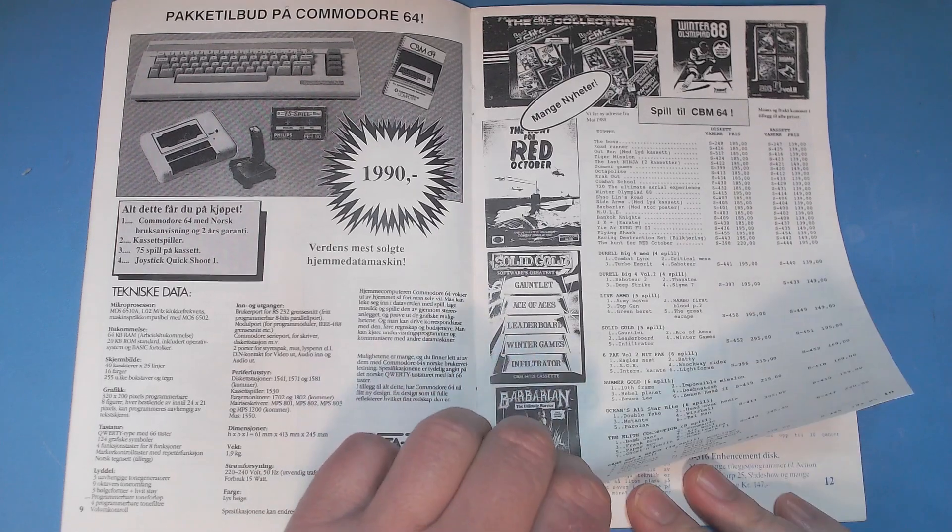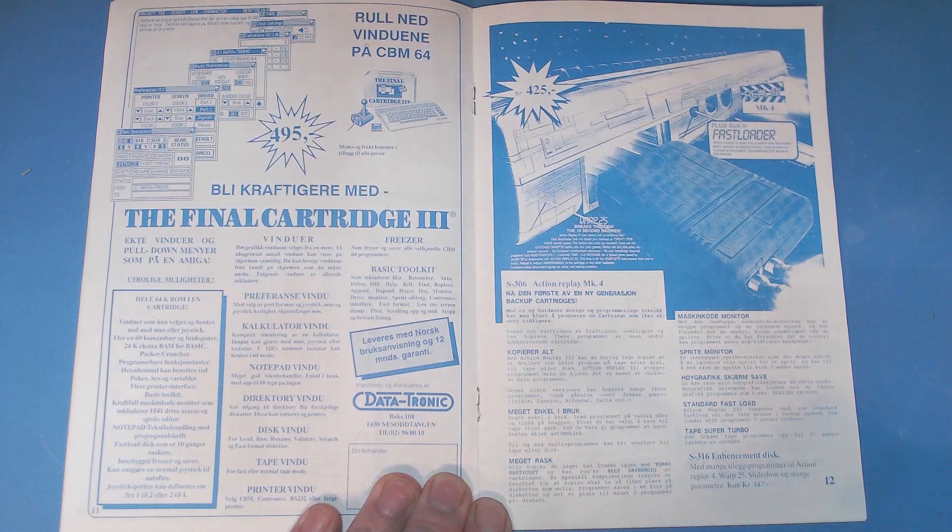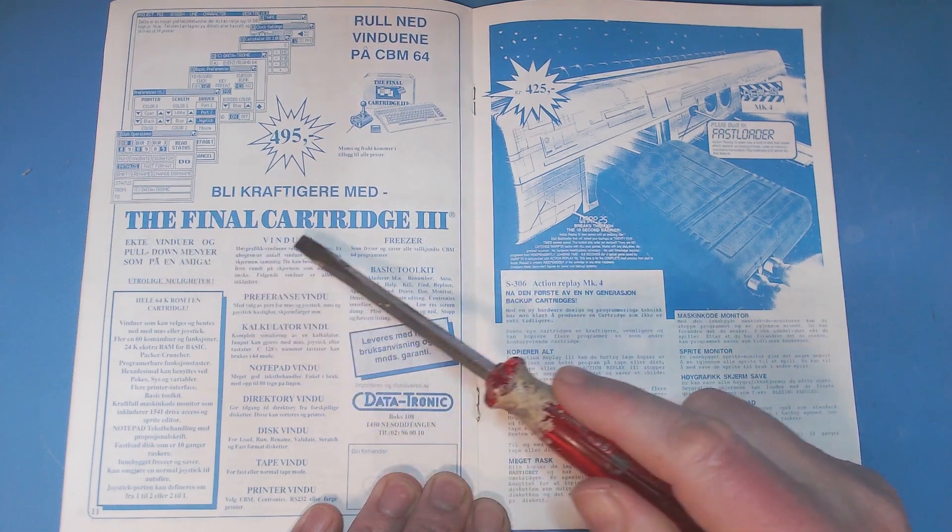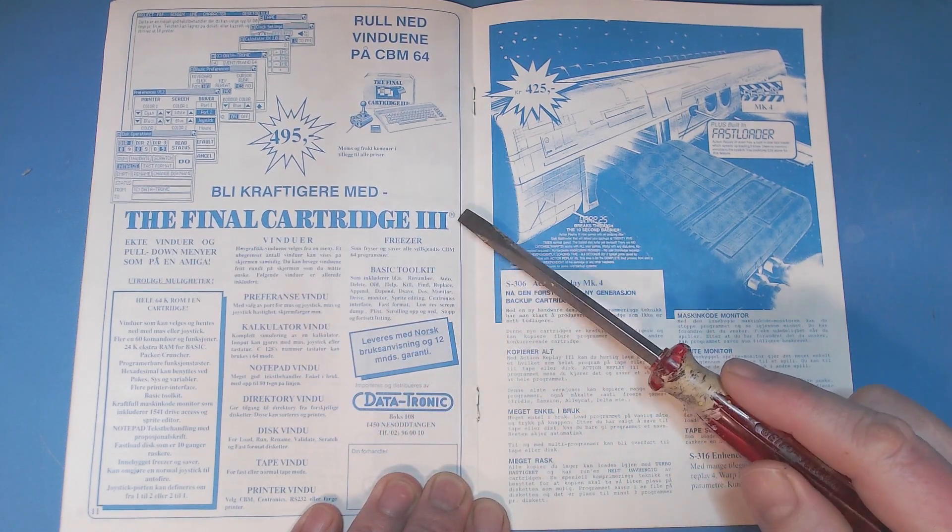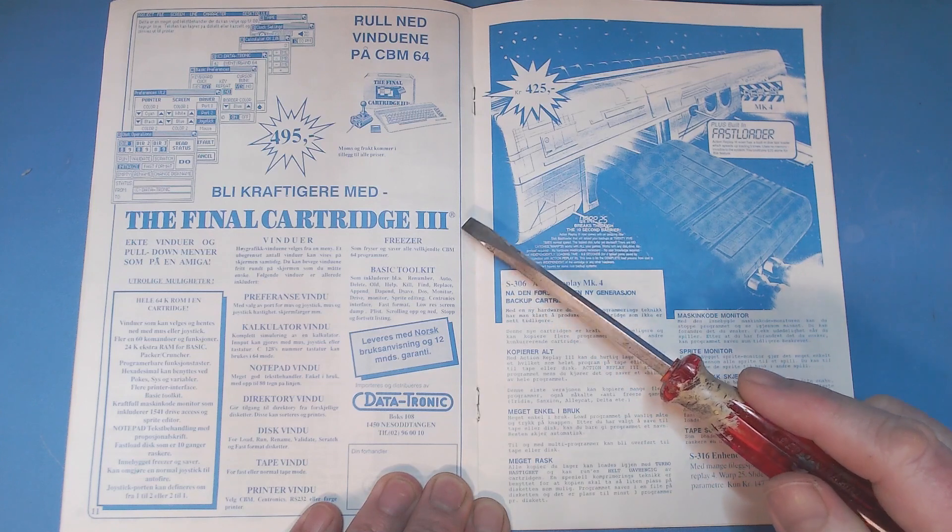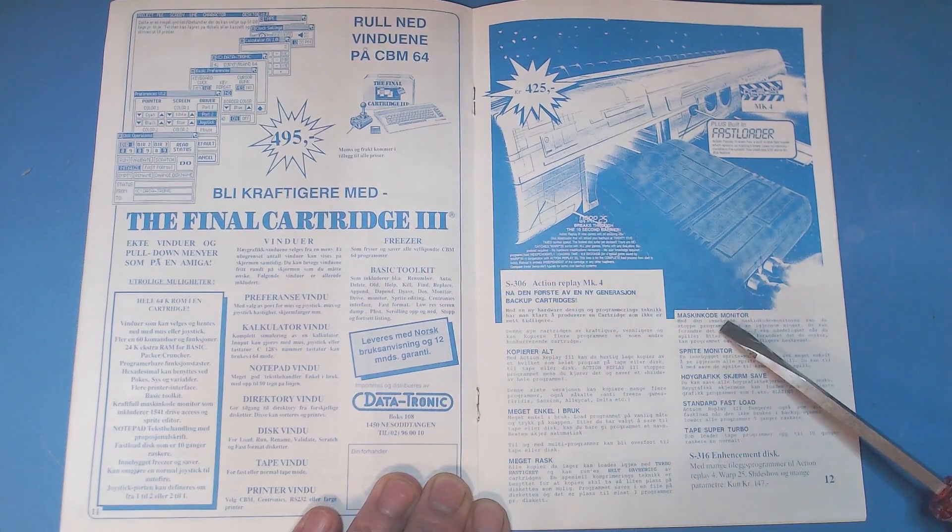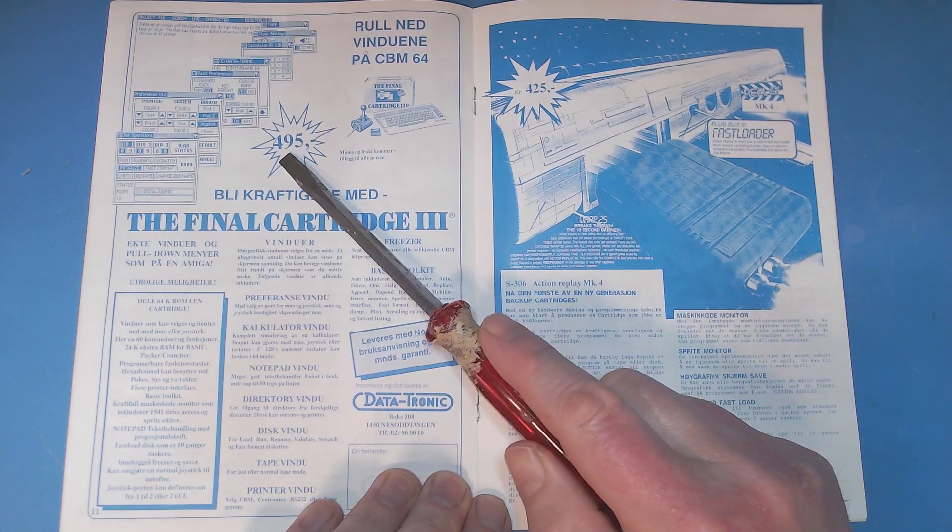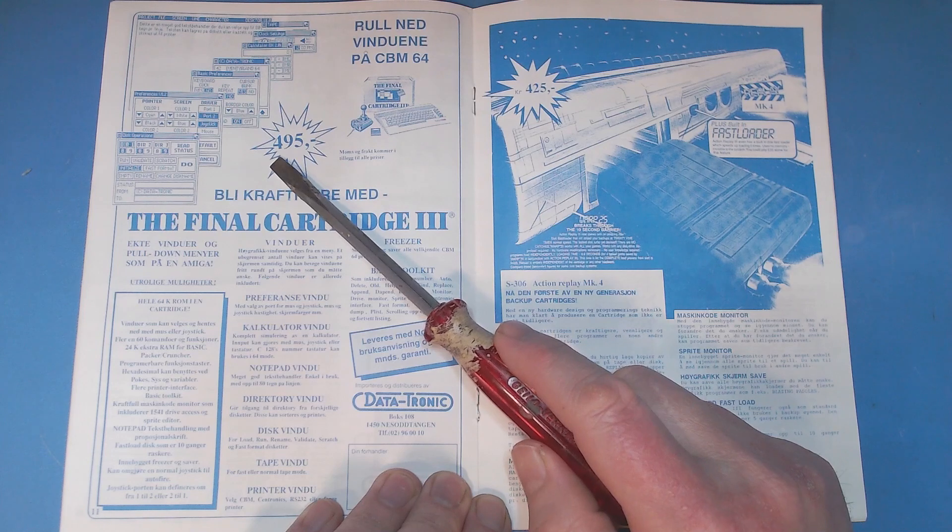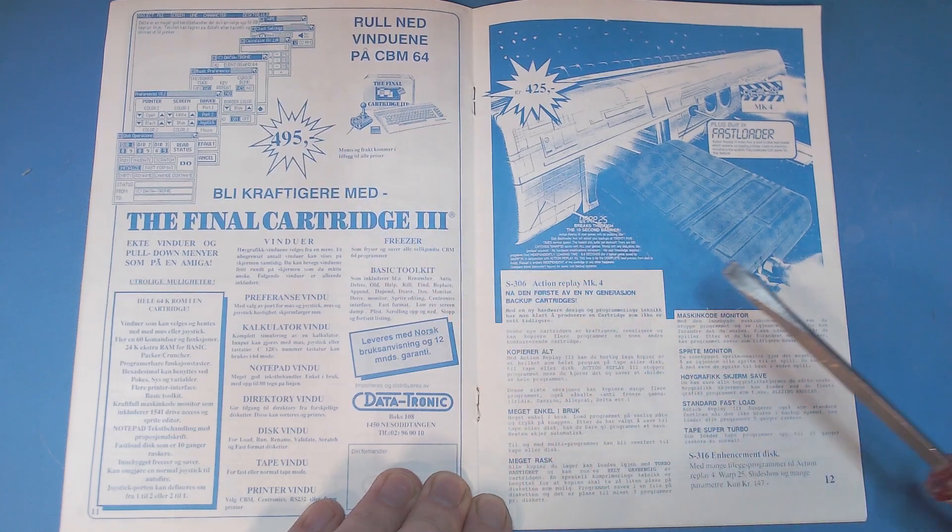Games for the Commodore 64, and now we come to the more interesting stuff. The Final Cartridge 3 was launched back at this time. I myself never owned the Final Cartridge 3 back in the day - I only had version 2, but I kind of liked that, and it was also considerably more stable than the Final Cartridge 3 with all its menu-driven options. The price for this, 495, was actually pretty cheap. I remember parallel importing mine from England, and I paid about 700 Norwegian kroner for my Final Cartridge 2 back in the day.